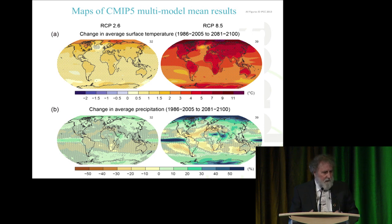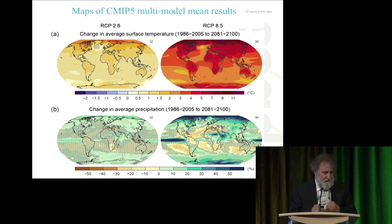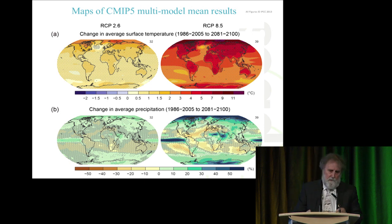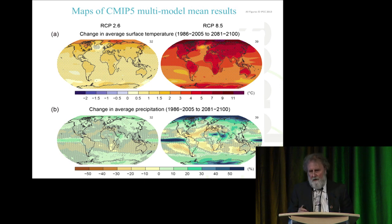The world we at least need is the RCP 2.6 — a low-emission scenario — in which we can probably limit human-induced climate change to around 2 degrees Celsius, maybe less. But if we have a high-emission scenario — RCP 8.5 — we're going to see huge changes in climate: globally averaged 3, 4, even 5 degrees Celsius. Land areas warm more than the oceans and high latitudes warm more than equatorial regions. We're going to see major changes in precipitation: wet areas getting wetter and dry areas getting drier.